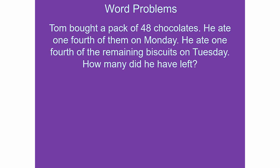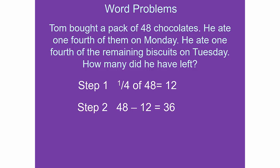Tom got a pack of 48 chocolates. He ate one-fourth of them on Monday. He ate one-fourth of the remaining chocolates on Tuesday. How many did he have left? One-fourth of 48 is 12 — that's step one. Step two: 48 minus 12 gives 36. Then one-fourth of 36 is 9, so he had 9 chocolates left.